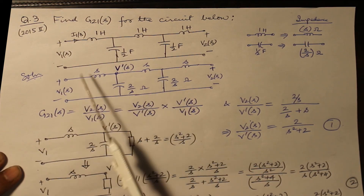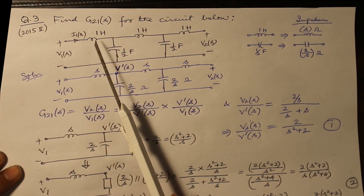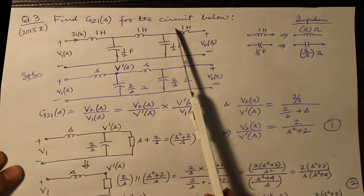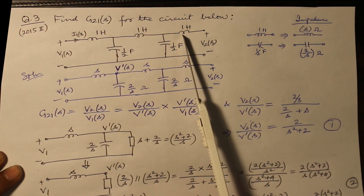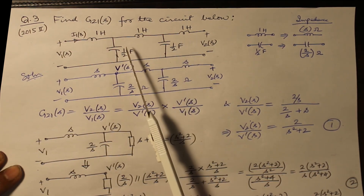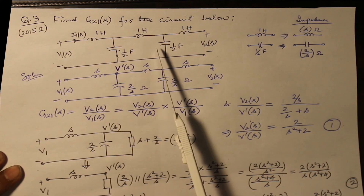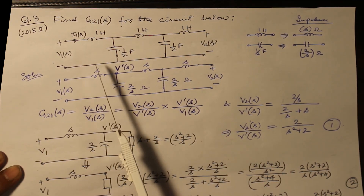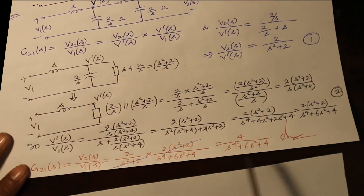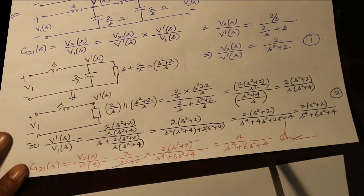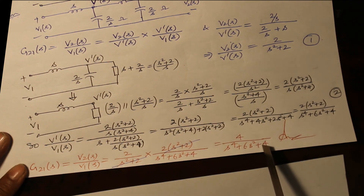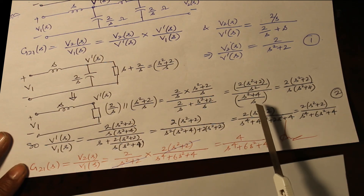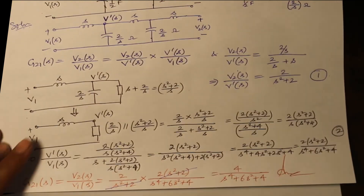One important thing to note in this diagram: though you have 5 energy storage elements, since no current is flowing through the 1 Henry inductor, the maximum order of the denominator representing V2S by V1S is 4, seen as S to the 4 plus 6S squared plus 4. This is a very important point which will come into the next unit of network synthesis.